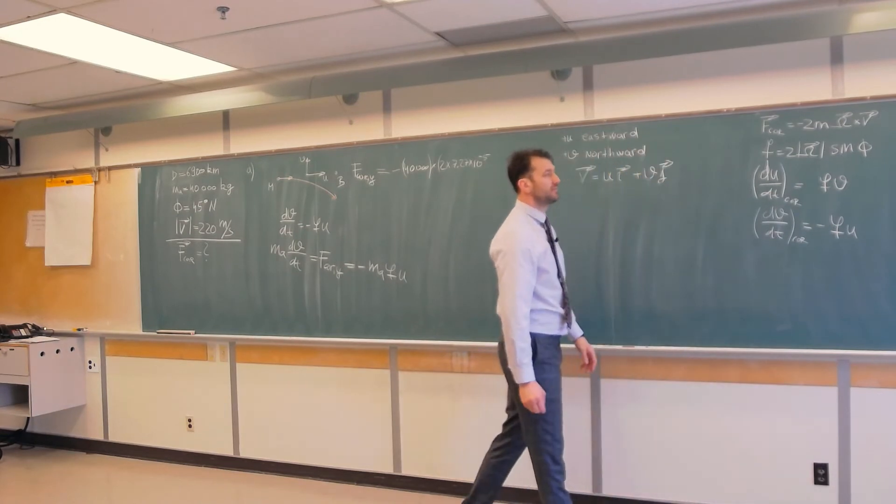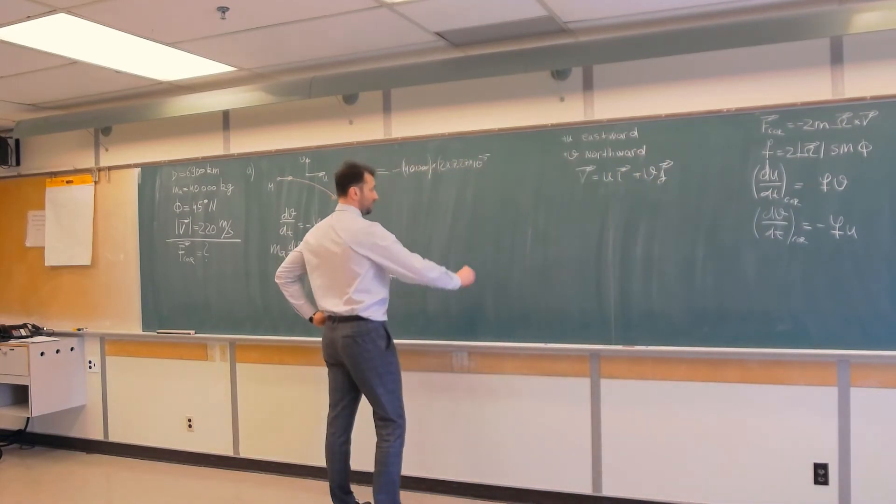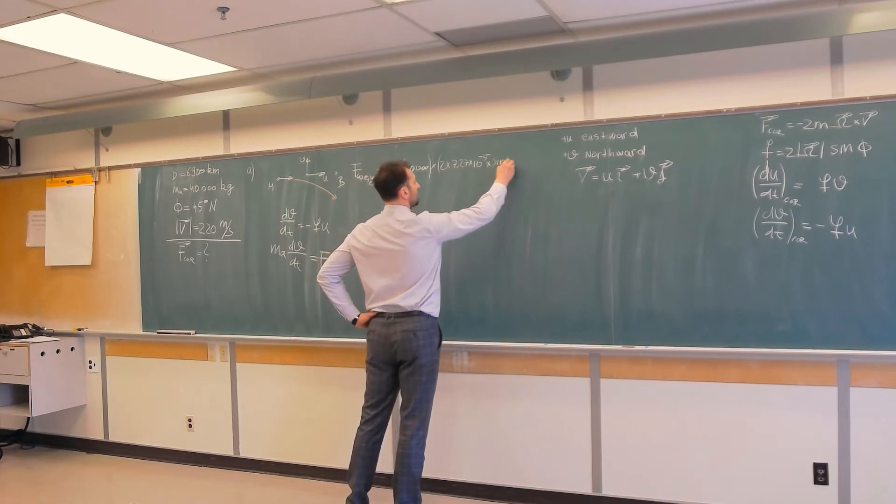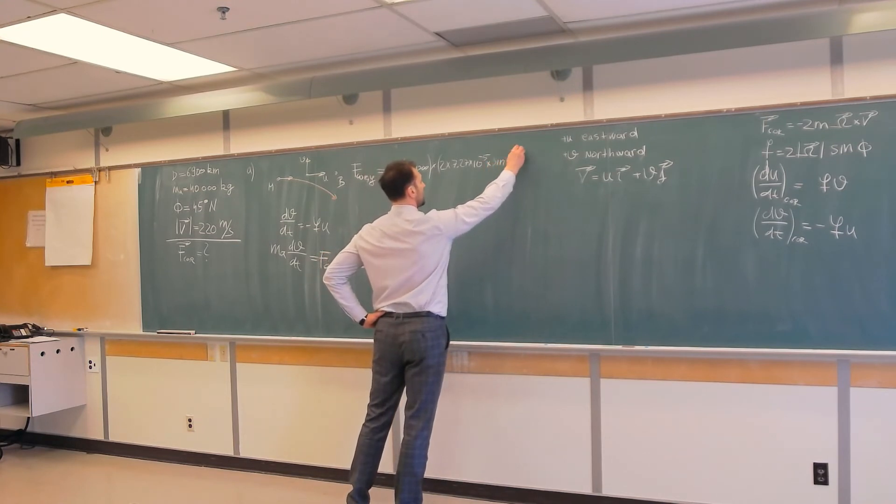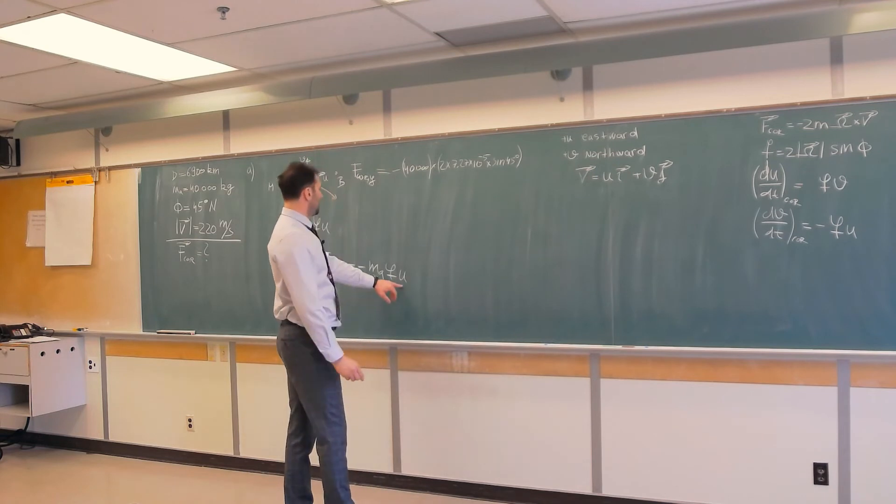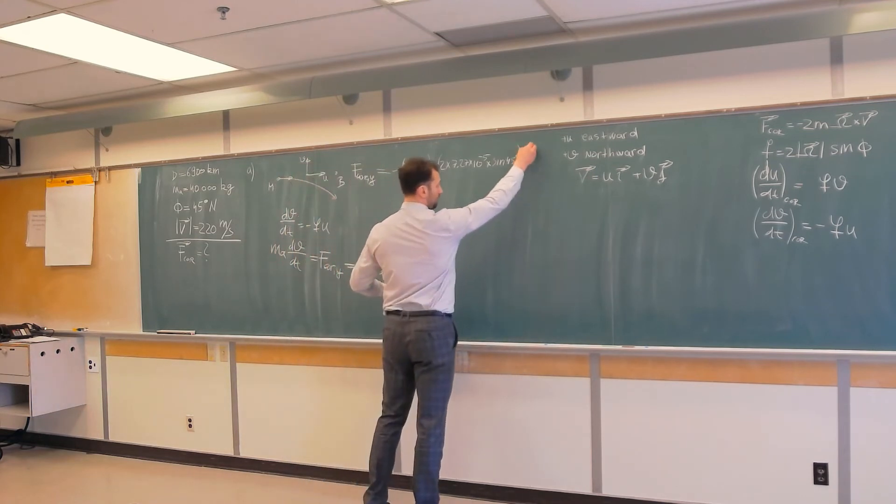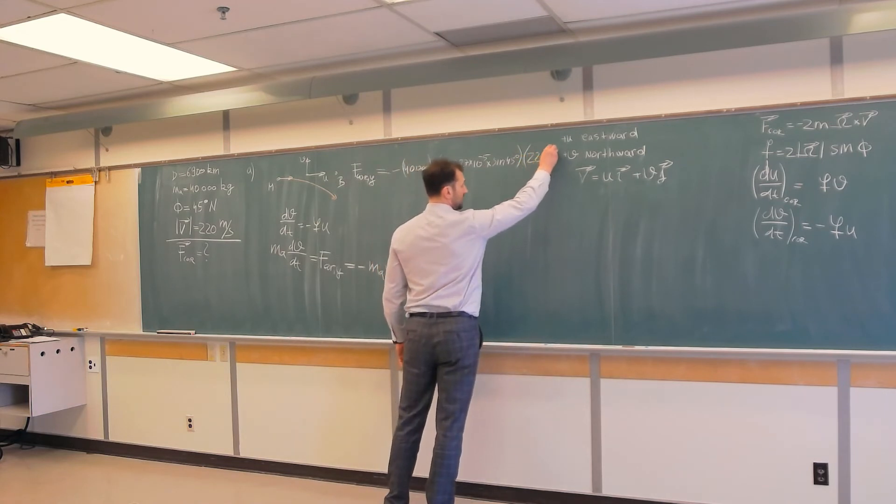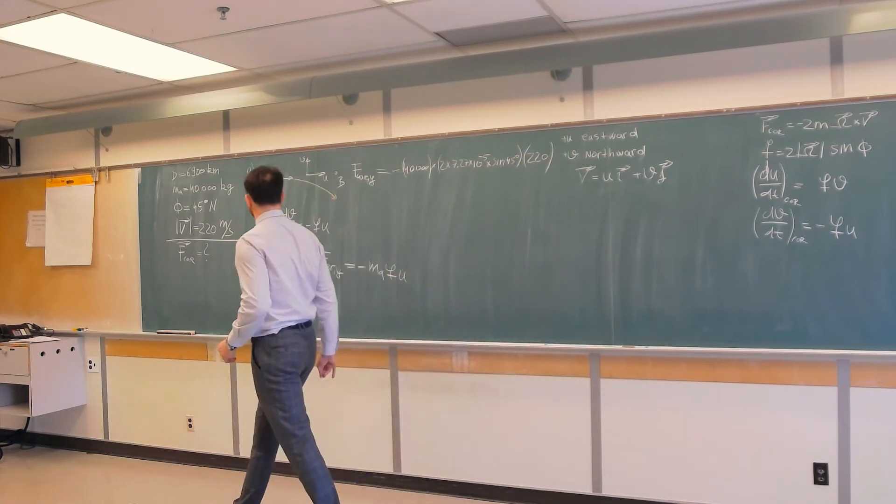So f is 2 times omega sine phi. Omega is angular velocity of Earth, times sine of 45 degrees, and times u. And u is given, that's 220 meters per second.